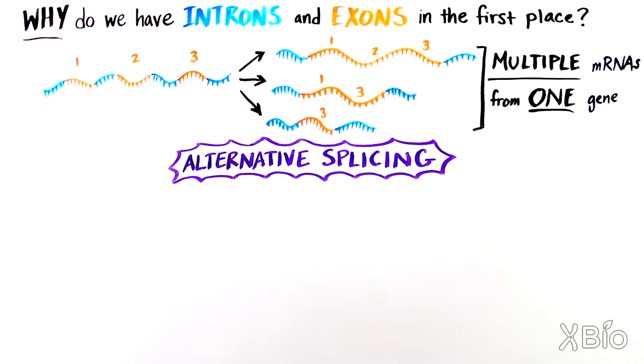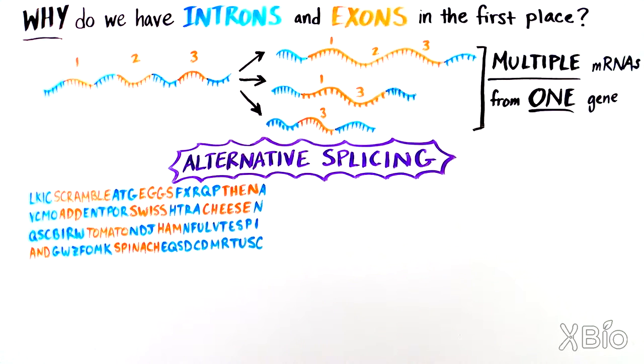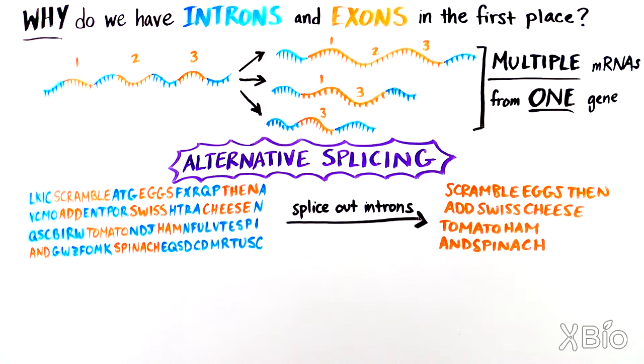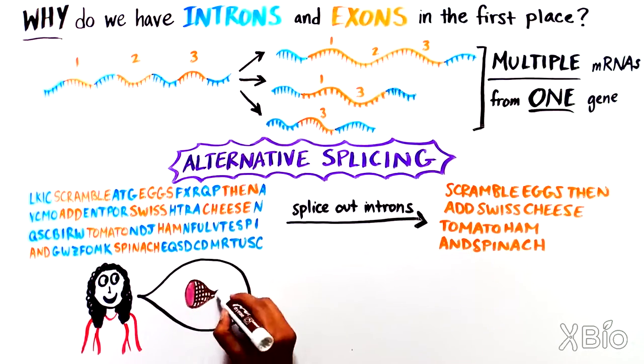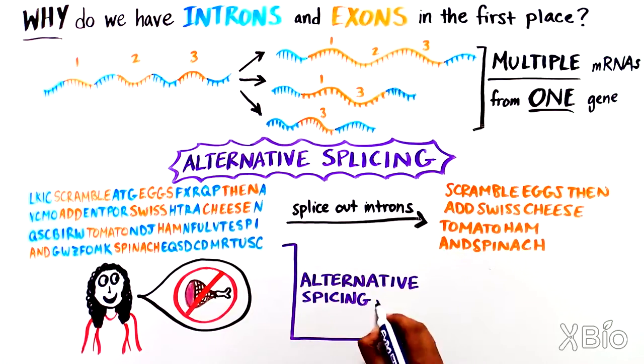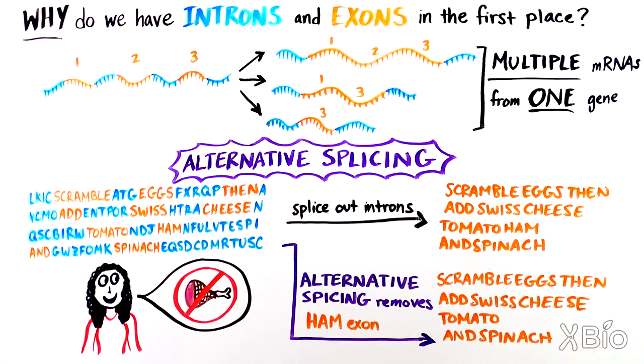Let's go back to the brunch dish your friend requested. If all the introns are spliced out, it reads: Scramble eggs, then add Swiss cheese, tomato, ham, and spinach. Let's say another friend joins you, but she's a vegetarian. Alternative splicing would remove the exon corresponding to ham, so she could have an omelette with Swiss cheese, tomato, and spinach.